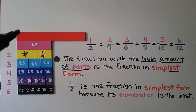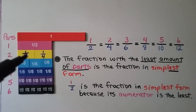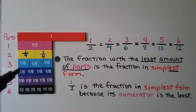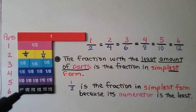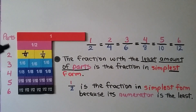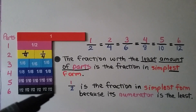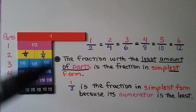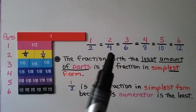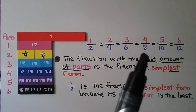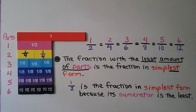Now look at these fraction models. Here we have one whole, one-half, two-fourths, three-sixths, four-eighths, five-tenths, and six one-twelfth pieces. They're all the same length as the half. One-half equals two-fourths, which equals three-sixths, which equals four-eighths, five-tenths, and six-twelfths. The fraction with the least number of parts is the fraction in simplest form.